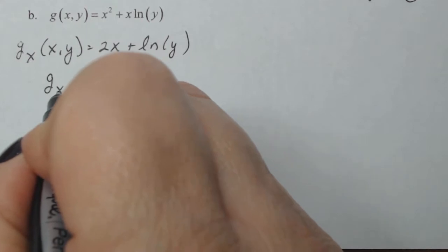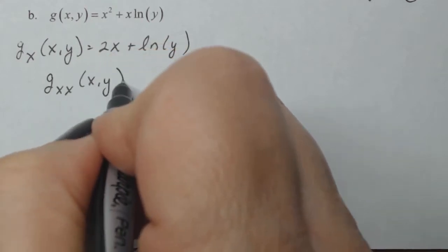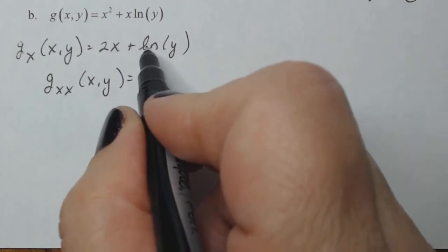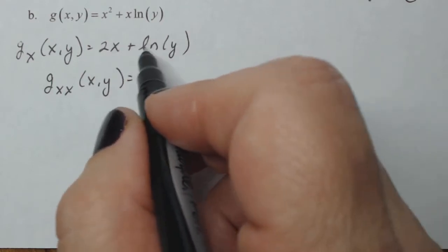Let's do g sub xx. So the derivative of this guy with respect to x is 2. The derivative of this guy with respect to x is zero because that's a constant.